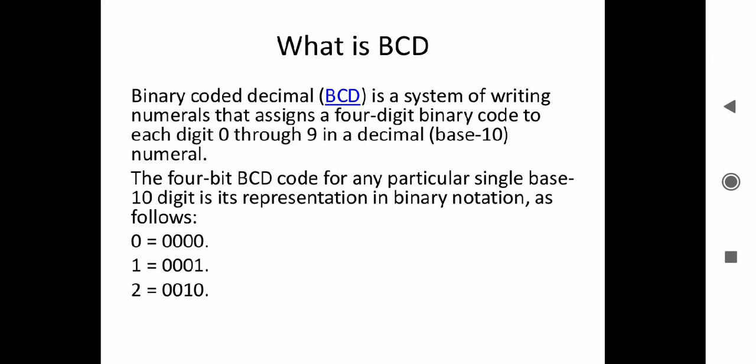Suppose if you want to represent 9, decimal 9's equivalent in binary is 8 plus 1, which is 1001. That is the highest digit symbol in decimal. So 4 digits in the group. 0 represents 0000, 1 represents 0001, 2 represents 0010, 3 is 0011, 0100, like that.